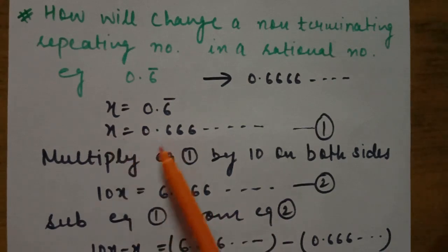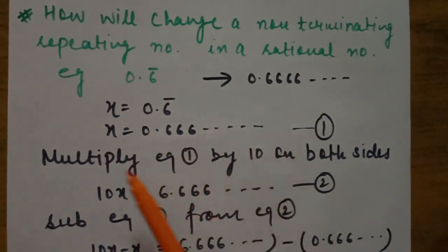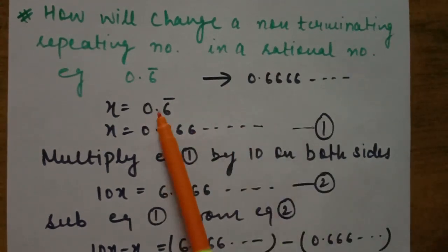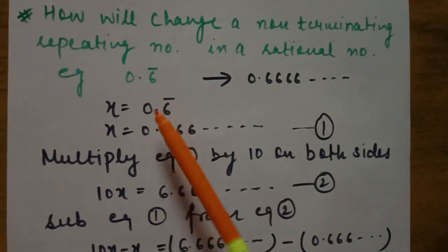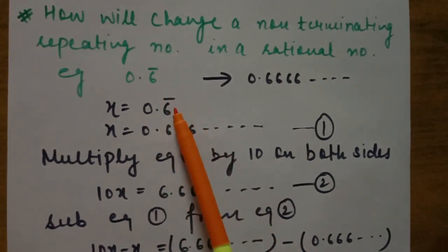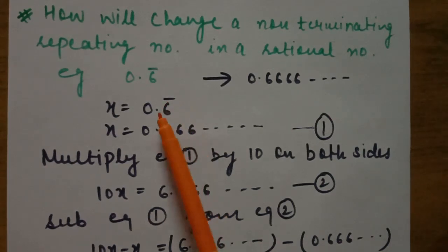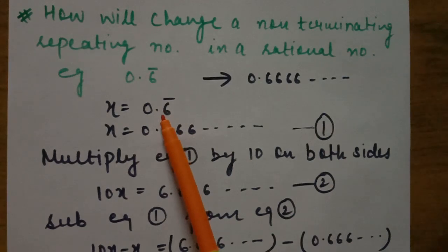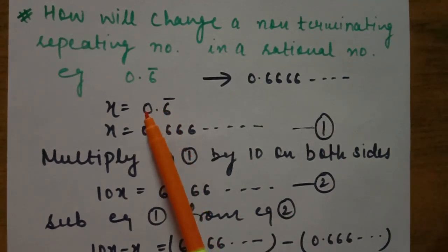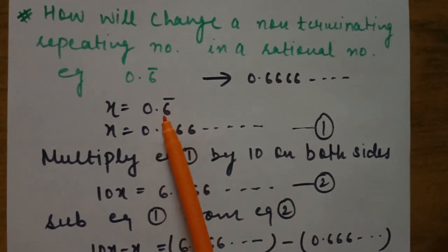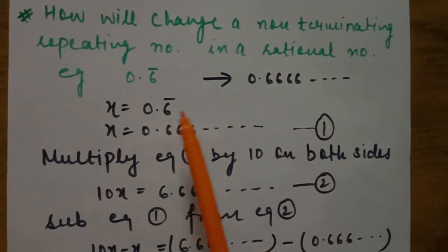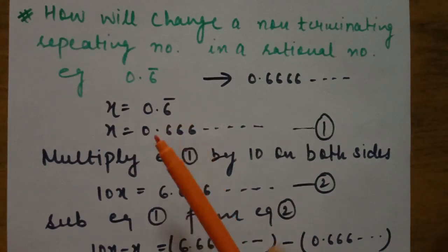Let x = 0.6̄ = 0.666... Step one: remove the bar. A condition for converting: after the decimal point, only the digits present under the bar should appear on the right side. If any digit without a bar is present, shift it to the left side of the decimal. Here, only one digit is under the bar.